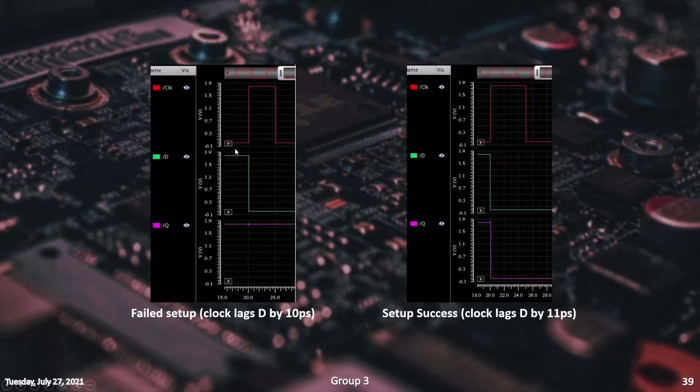Keeping the D input unchanged, we delay the positive edge of the clock signal. The minimum delay time that allows the output to follow the input is taken as the best setup time, which in our case is 11 picoseconds.